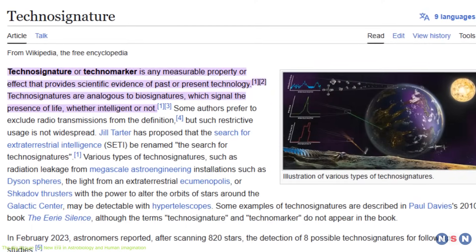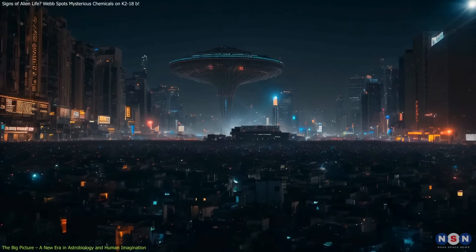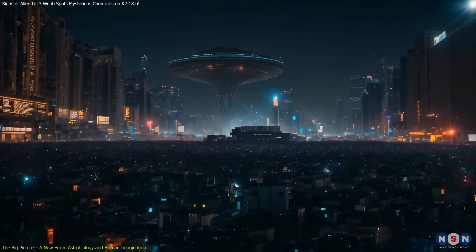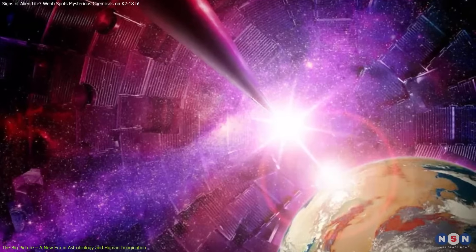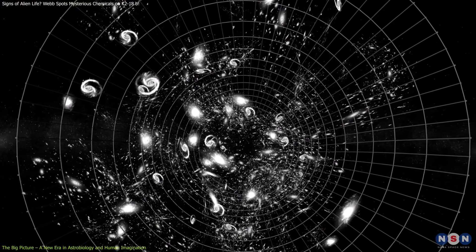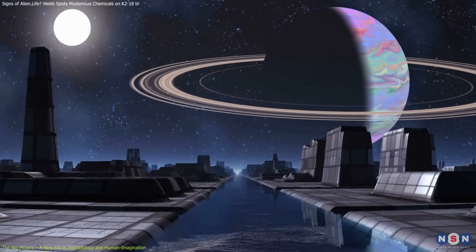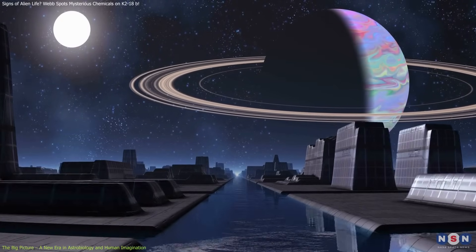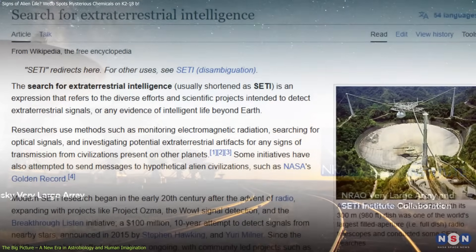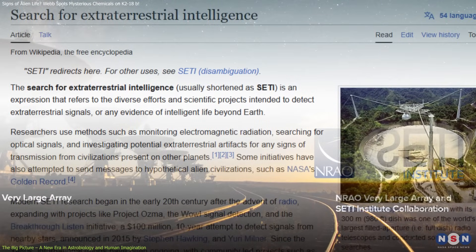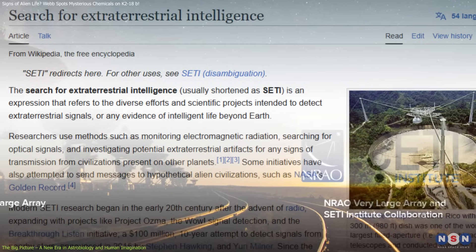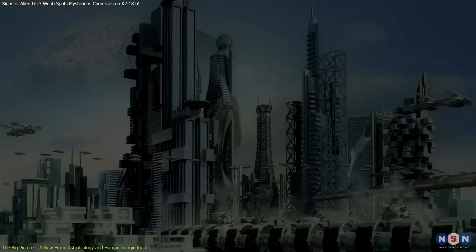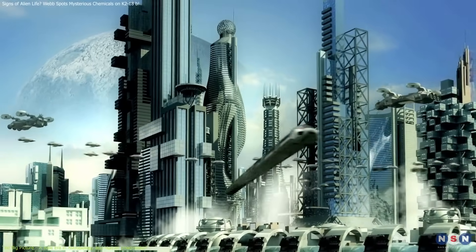When biosignatures alone don't provide clarity, the search turns to technosignatures—evidence of technology or intelligent life. These include artificial light emissions, laser pulses, or clusters of satellites in orbit, any detectable feature that would strongly suggest deliberate engineering. Organizations like SETI, the Search for Extraterrestrial Intelligence, are dedicated to finding these kinds of signals. While the odds are long, the payoff would be conclusive.